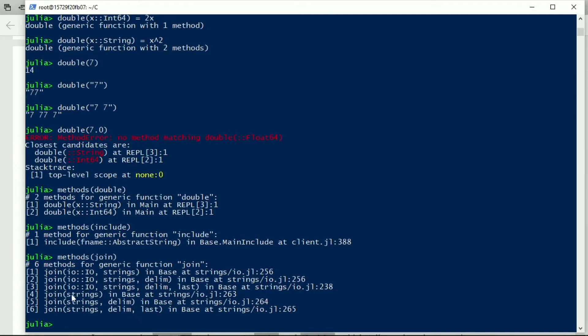We can have join just strings by themselves, or strings with one delimiter, so it's the same delimiter between all the strings that are being joined, or with a delimiter and then also a last delimiter, where all but the very last of the delimiters are last. And so that's three methods, and those three methods occur also if you want to send it to an IO that you define.